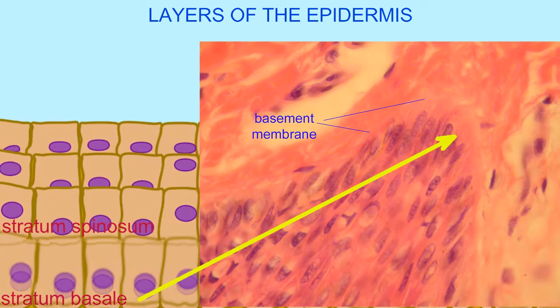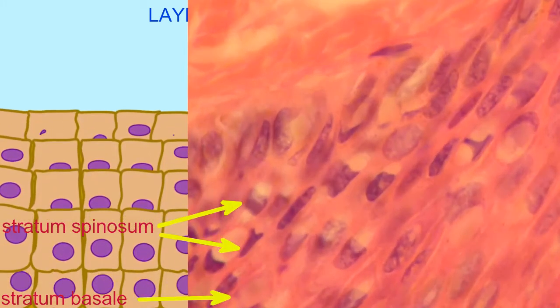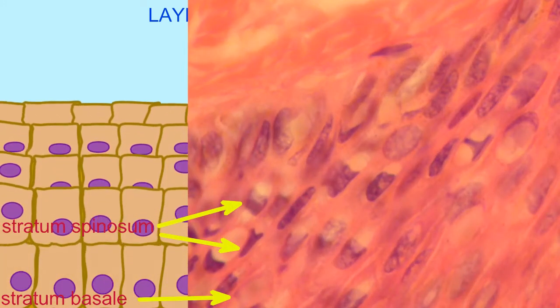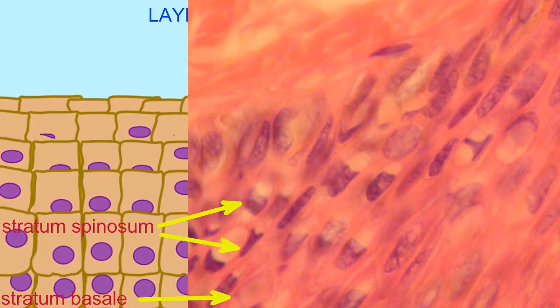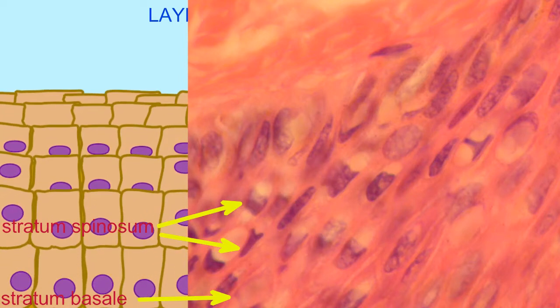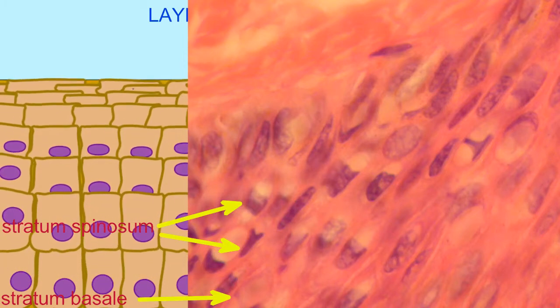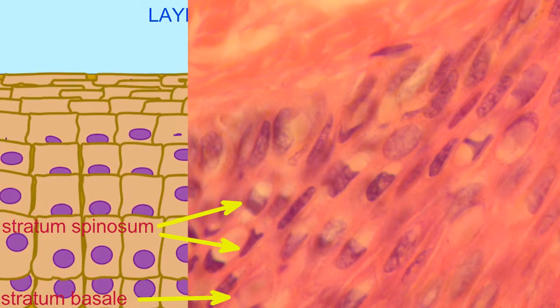The second layer is the stratum spinosum. Here, cells are producing keratin, and they have melanin granules produced by the melanocytes. And this layer has the highest concentration of the dendritic cells, which function in the immune system.